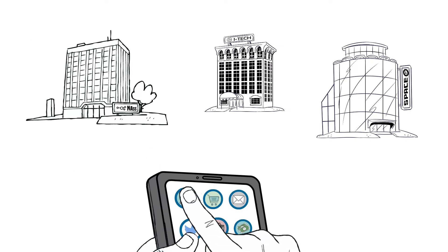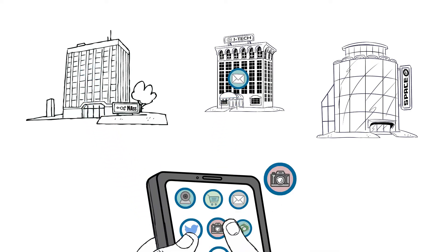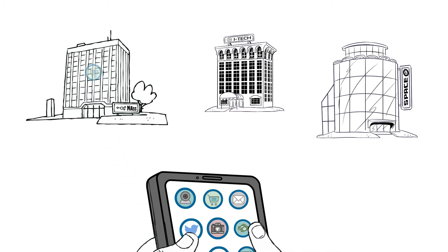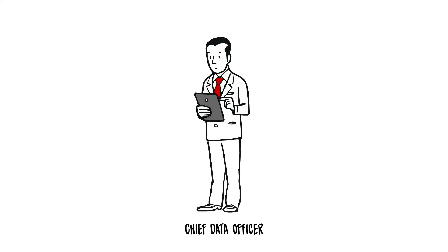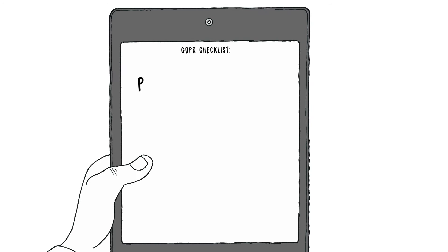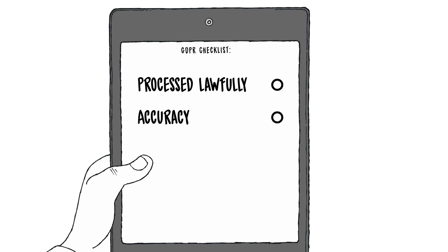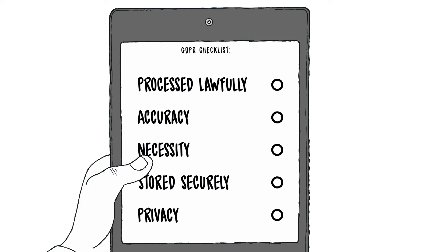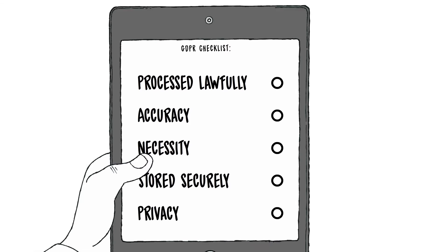This is the biggest change to Europe's data protection for two decades, and it will completely overhaul how businesses process and handle personal data. To comply, businesses will need to prove that their personal data is processed lawfully and fairly, accurate and up-to-date, only collected if proven necessary for processing, and stored securely so it doesn't fall into the wrong hands, becomes lost, damaged or destroyed.